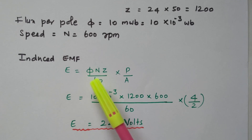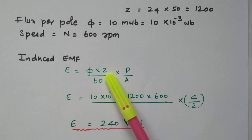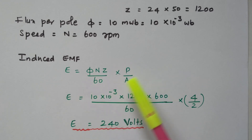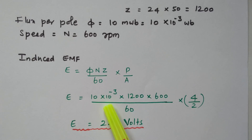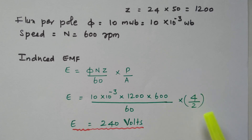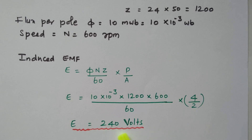Here, φ is flux, N is speed, Z is number of conductors, divided by 60, multiplied by P (number of poles) divided by A (number of parallel paths). Substituting: flux = 10 × 10⁻³, Z = 1200, N = 600 RPM, P = 4, A = 2 (wave winding). By simplifying, we get 240 volts. The EMF induced in the generator is 240 volts.